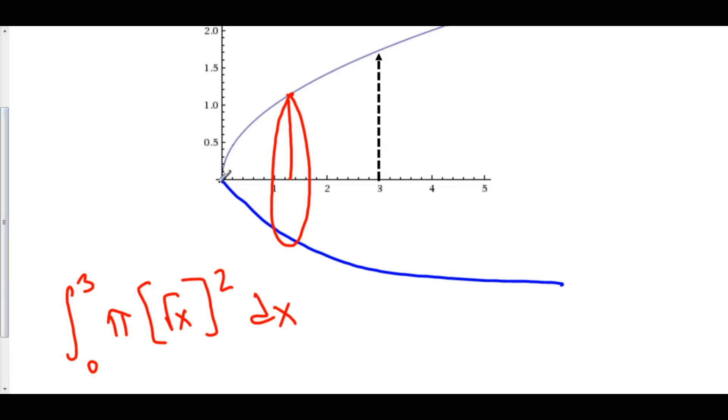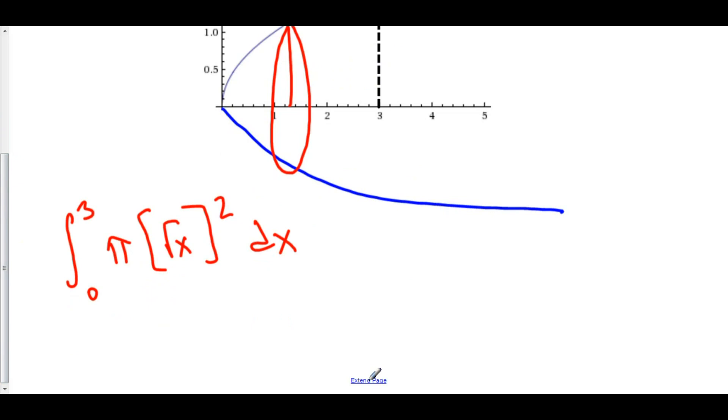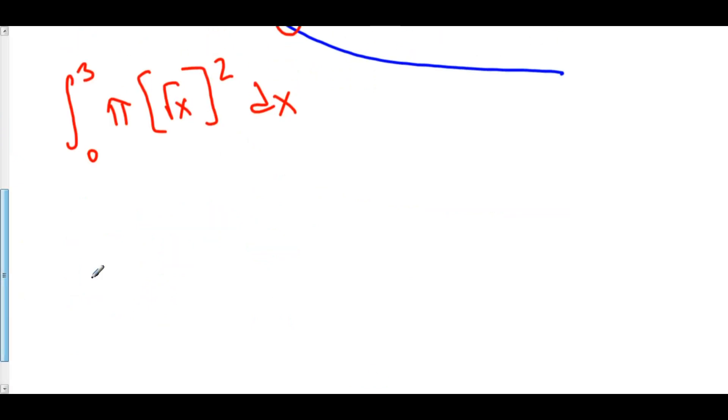We're taking an infinite number of circular cross-sections from 0 to 3. The radii of these cross-sections is just the function value, the square root of x. This is equal to pi times the integral from 0 to 3 of the square root of x squared, which is just x dx.